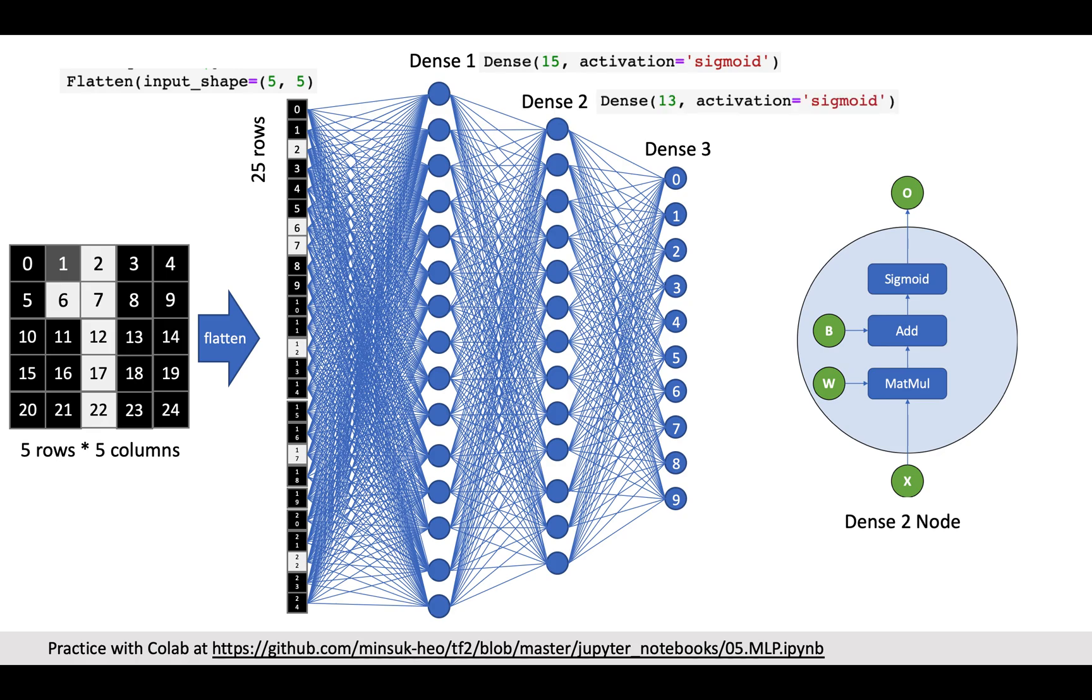The second dense layer is similar to the first dense layer. It takes first dense layer's output and outputs 13 dimension data. This dense layer also uses same node format which have sigmoid activation function.